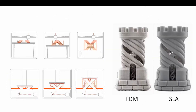FDM or filament printers use a plastic filament extruded through a nozzle in layers to create an object. SLA resin printing uses a small laser to fuse together a pool of resin to pull out a solid object. We offer FDM printing for free, but SLA resin printing will come at a cost.